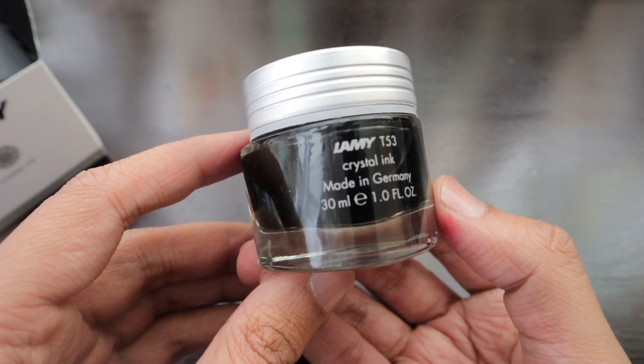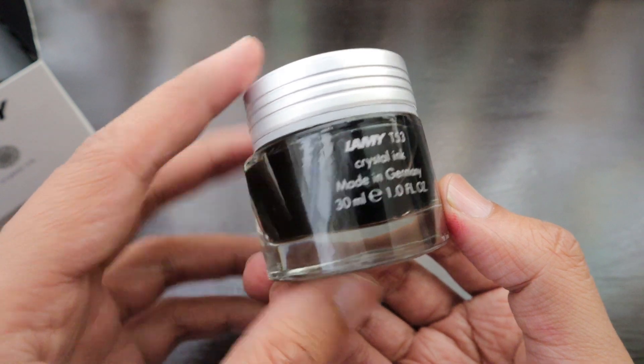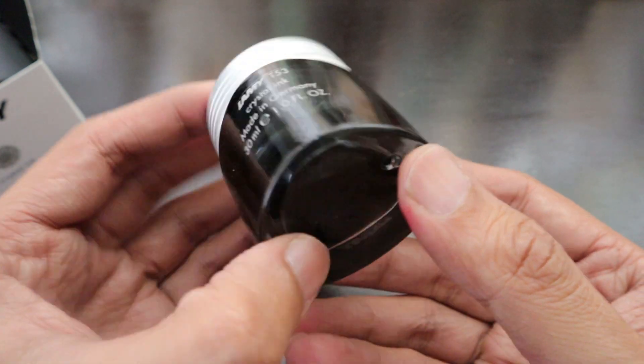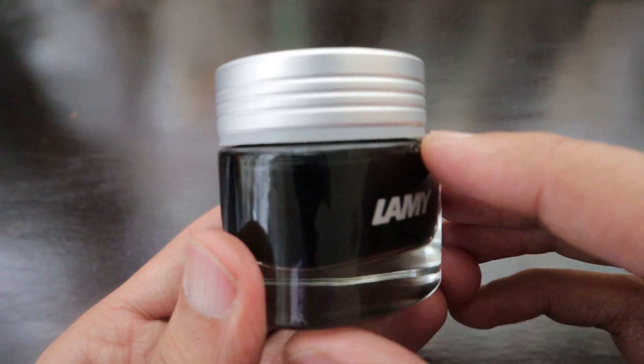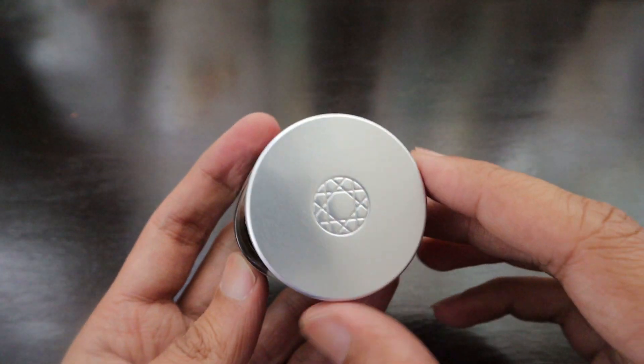This is how the bottle looks like. You'll also see there's a ring to identify the color of the ink. This is Agate, the gray version, and it's basically a silvery kind of ink. This is how the whole bottle looks.